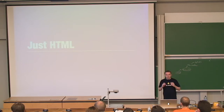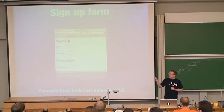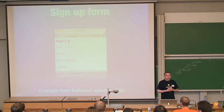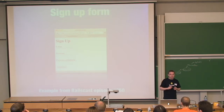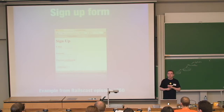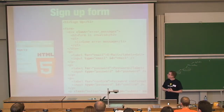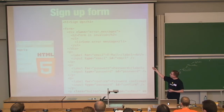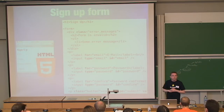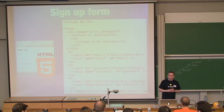When I told you what Wicket was — it's a component-oriented web framework that uses just HTML — let's explore that a bit. Let's create this sign-up form. I took this example from Railscast. If you want to make this in HTML5, the form would look something like this: you have a header, a form within it, some place to get feedback messages for your users, an email field, a password field, a confirmation box, and a button to submit it.